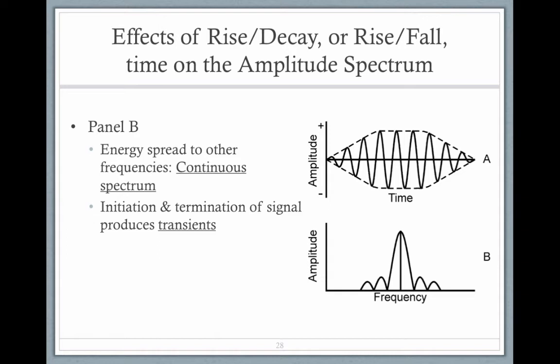So the energy is spread out over the other frequencies. And the beginning and the end of the signal produces transients, or extra energy. It's not a good thing - distortion, transient distortion. So you have a little bit of rise time and a little bit of fall time, and that's distortion. It doesn't just automatically happen.